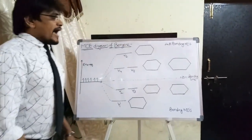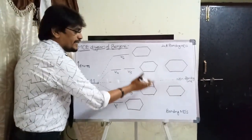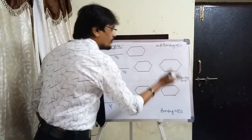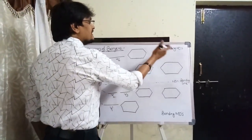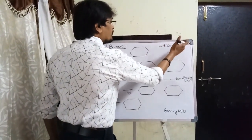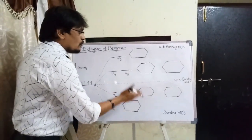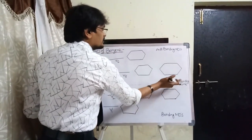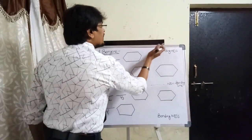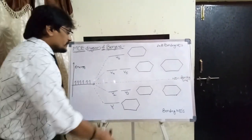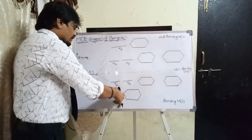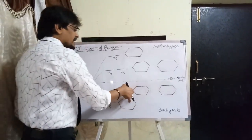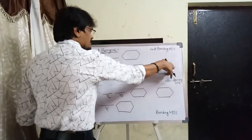Molecular orbitals occupying energy levels above the non-bonding line are called anti-bonding molecular orbitals, and molecular orbitals below the non-bonding line are bonding molecular orbitals. The six molecular orbitals of benzene are labeled psi 1, psi 2, psi 3, psi 4, psi 5, and psi 6.